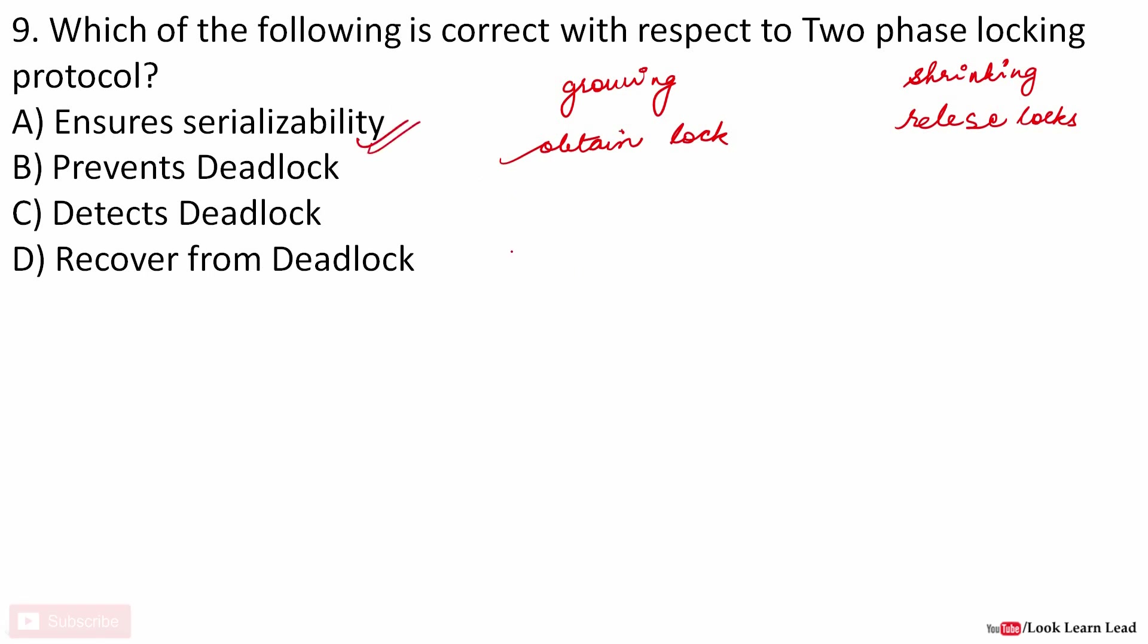What happens is if there are two transactions T1 and T2, if transaction T1 has lock 1, lock 2, lock 3, and lock 4, in the growing phase it won't release any lock. It would release the locks in the shrinking phase only, so it would ensure the serializability of the transactions.